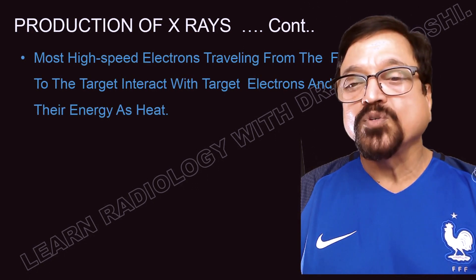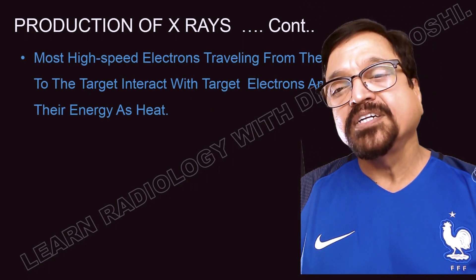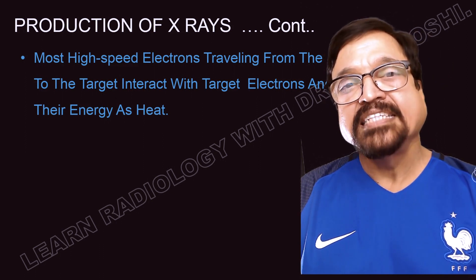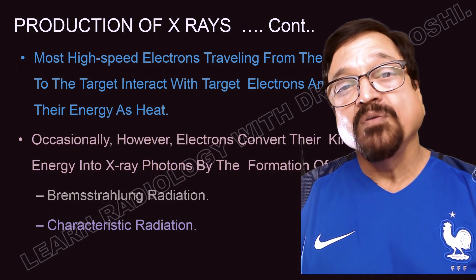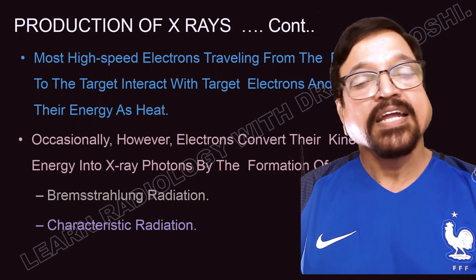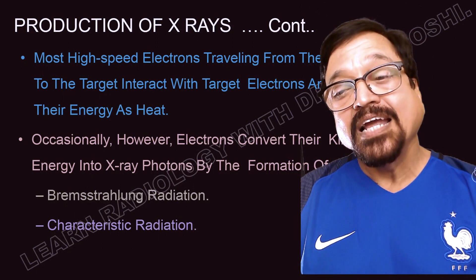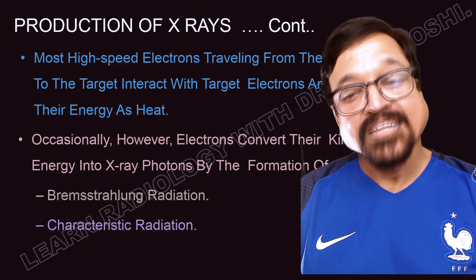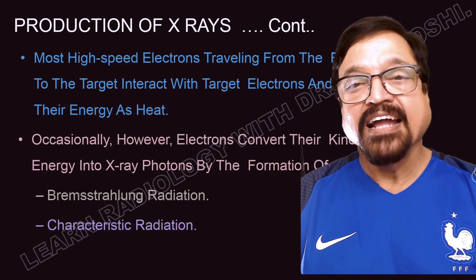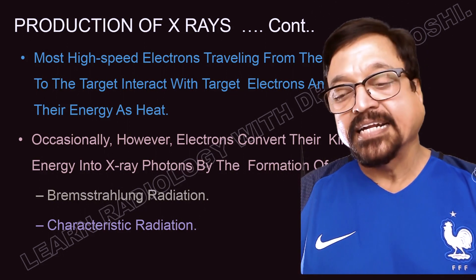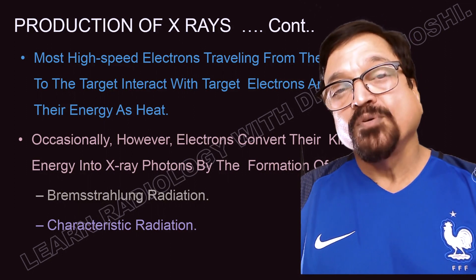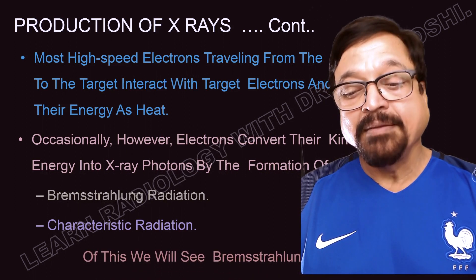In X-ray production, most high-energy electrons travel from the filament to the target, interact with the target electrons, and release their energy as heat — 99% of the energy transferred is converted into heat. Only 1% gets converted into X-rays. Occasionally, however, electrons convert their kinetic energy into X-ray photons by formation of Bremsstrahlung radiation — breaking radiation — or characteristic radiation. These are the two types of radiation that result from energy transfer.